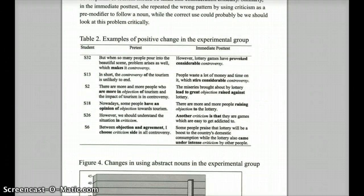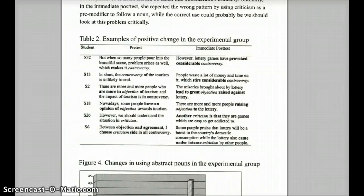An interesting result of this study was that students' holistic scores did not go up — the scores that improved were those related to vocabulary. For instance, in the pre-test a student had written: 'but when so many people pour into the beautiful scene, problem arises as well which makes it controversy' — using the word 'controversy' inappropriately. After exposure to vocabulary via the concordancer, in the second writing sample the student wrote: 'however, lottery games have provoked considerable controversy' — using the word in a much more appropriate manner.